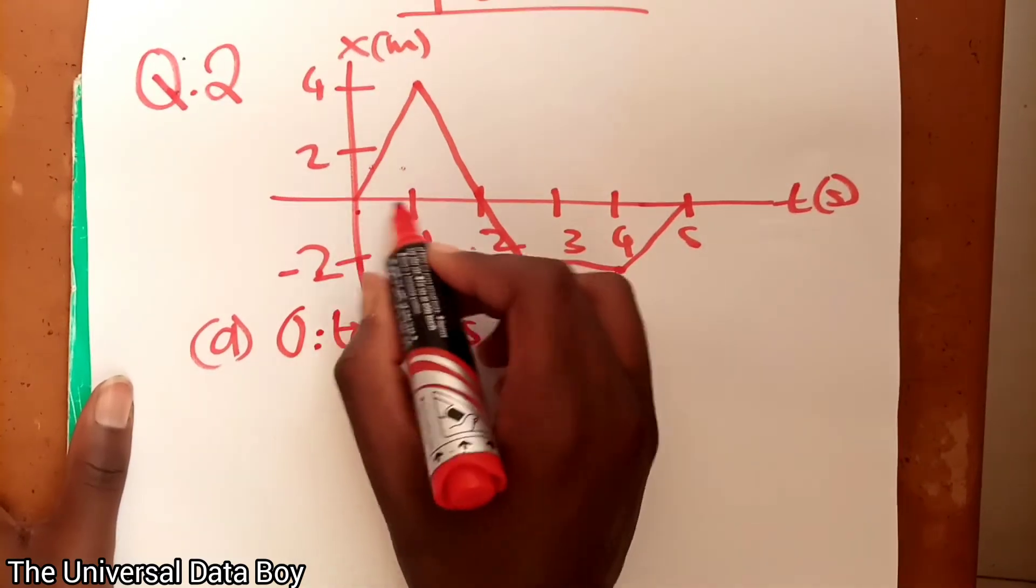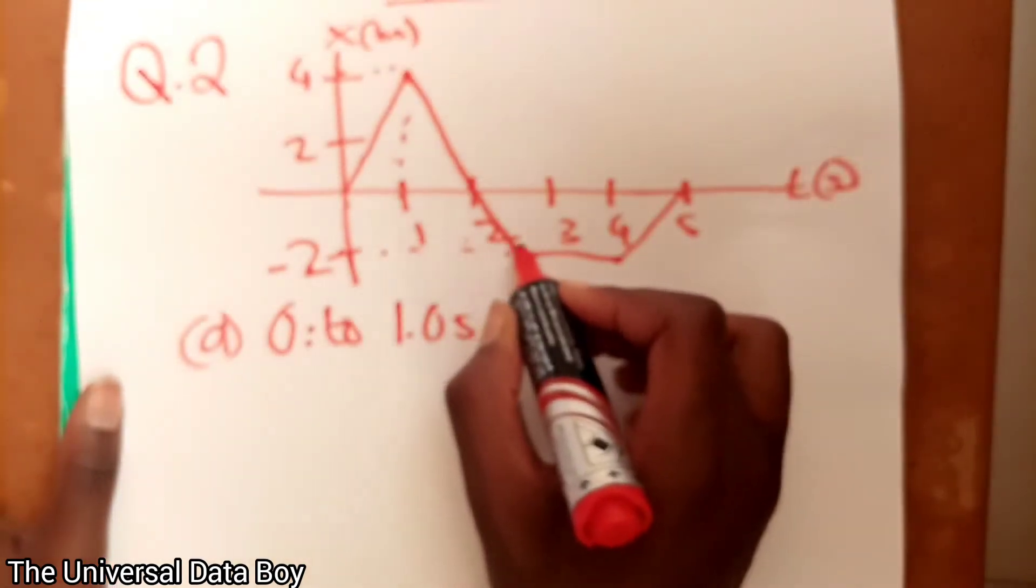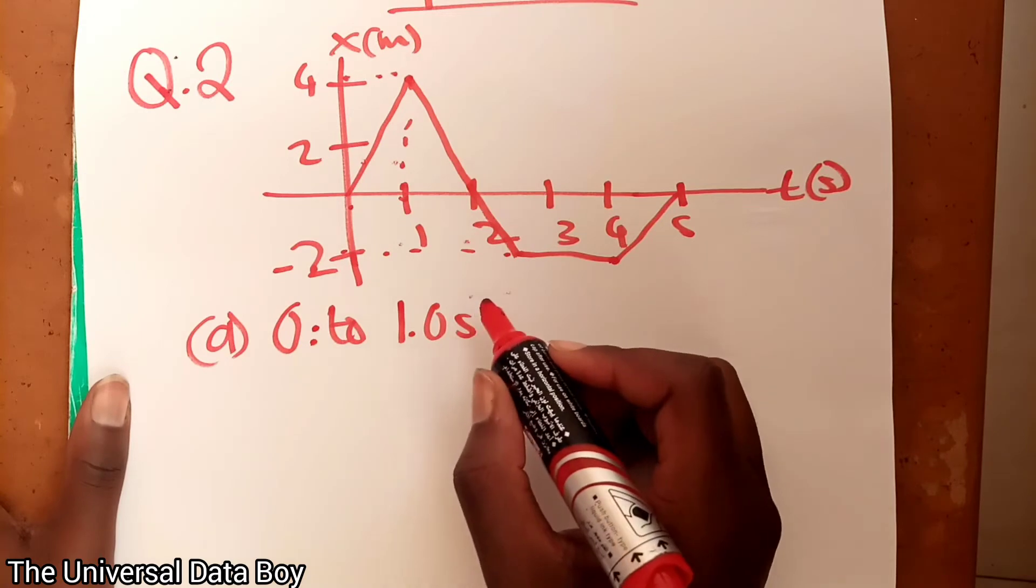So from here up to here. Let me draw this line. So now from 0 to 1 second, what's the average